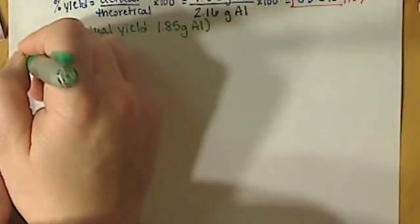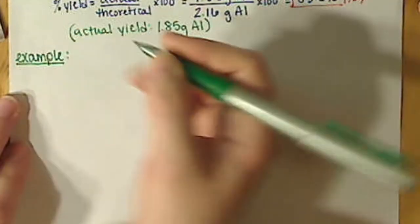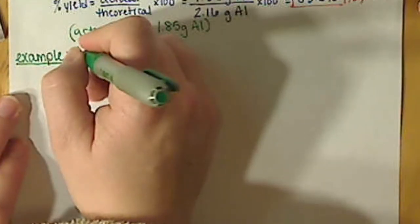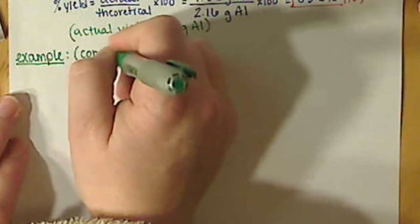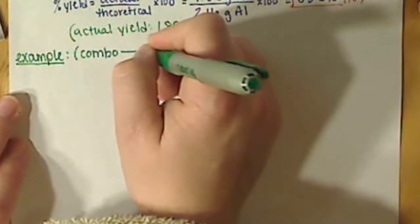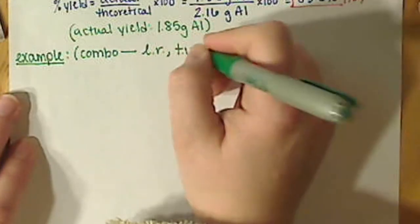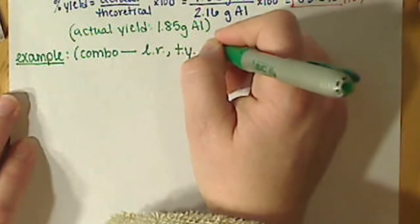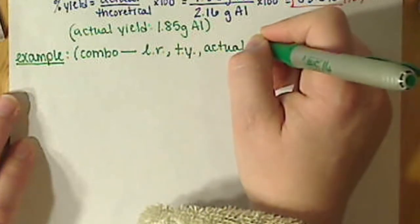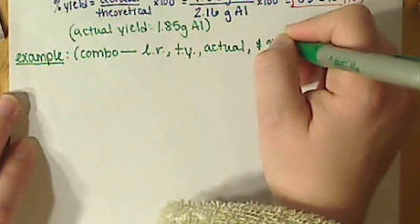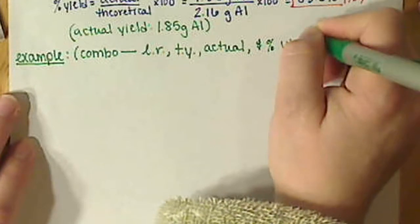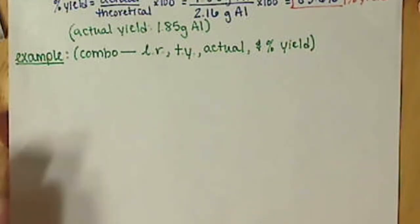Alright, so we're going to work through another example here, and this example is going to be kind of a combo. So we're going to combine limiting reactant, theoretical yield, the actual yield, and percent yield, all in one go.